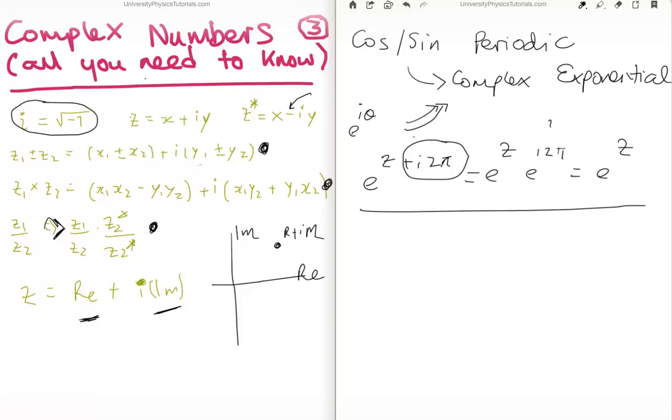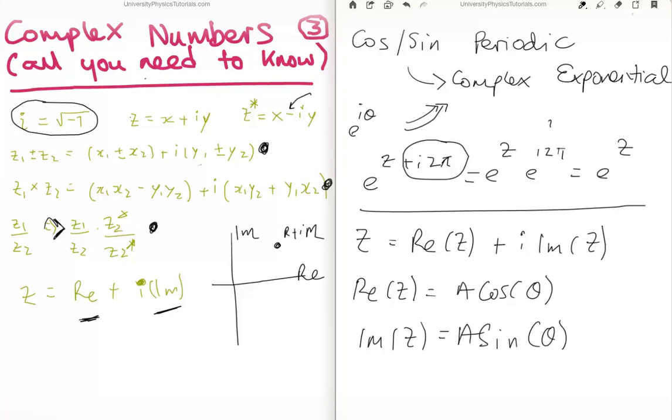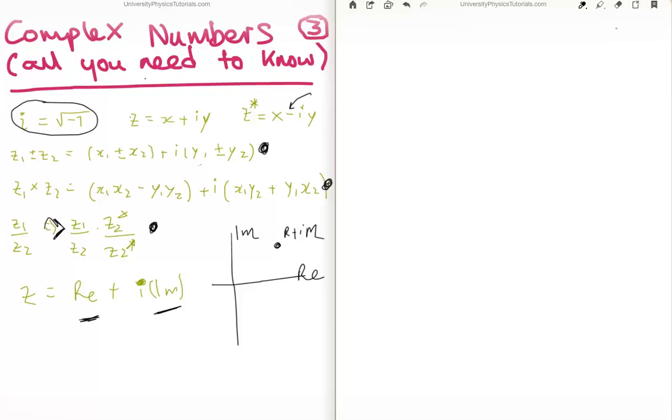What about the fact that any complex number can be represented as the sum of the real part and the imaginary part? So, just once more to write it, we have z is equal to the real part of z plus the imaginary part of z multiplied by i. OK. So, what that means is the real part of z is r cos theta, or a cos theta depending on what you're using. And the imaginary part of z is equal to a sin theta.